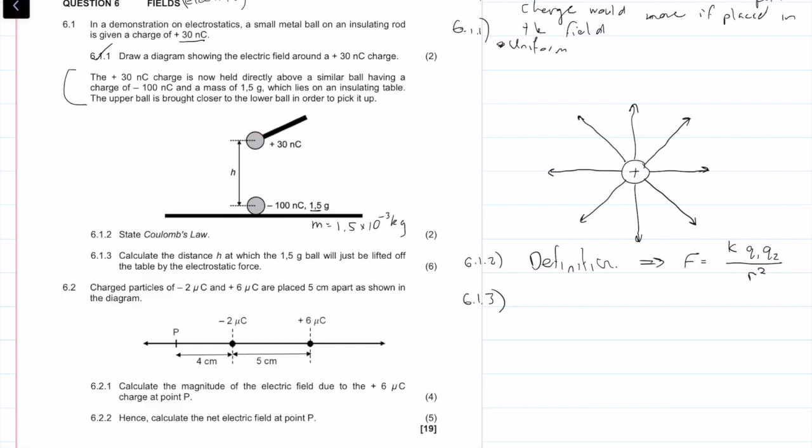Calculate the distance H at which the 1.5 gram ball will be lifted off the table. When this negative point charge is lifted off the table, the force upwards must be equal to the downwards force. It needs to be in equilibrium. Basically, the force upwards is equal to the force downwards.